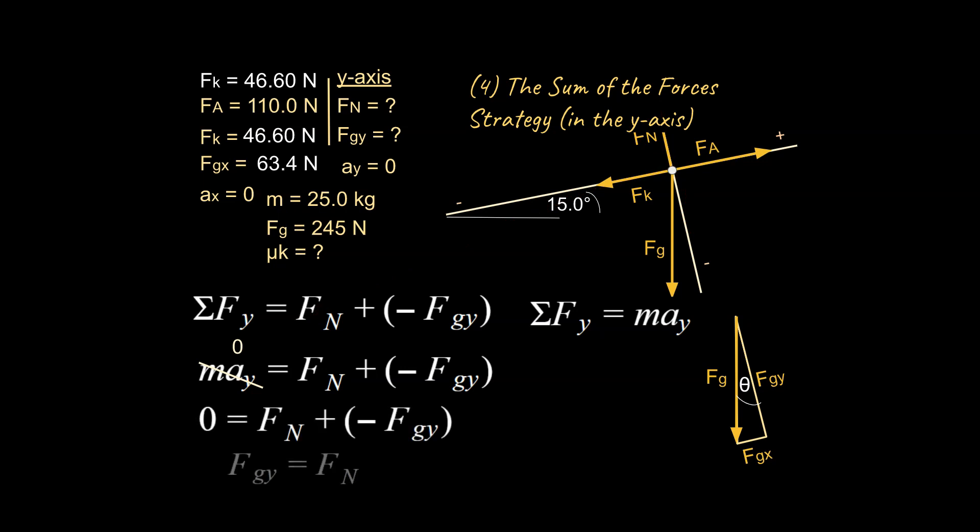The one thing that we don't know is essentially FN here. Typically, we don't know it at this point. And then we can go ahead and just say, well, we know what FGY was, so we know FN is equal to 237 newtons. And we're going to go ahead and update our list of known values to reflect our new information.